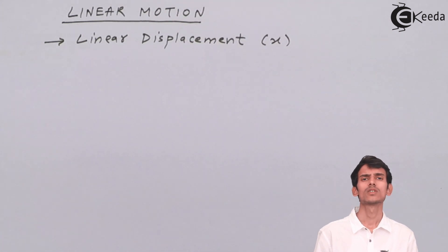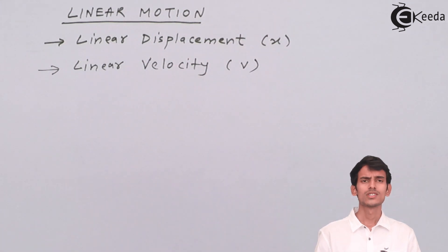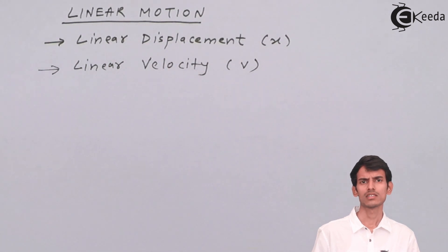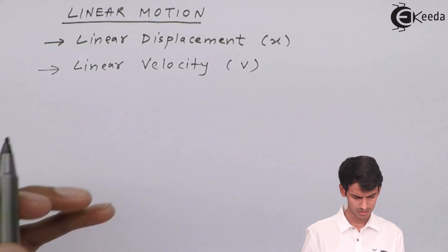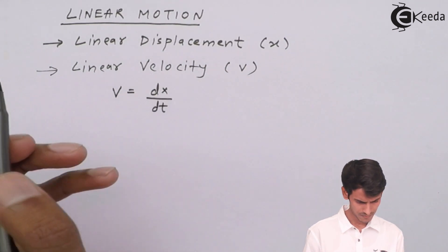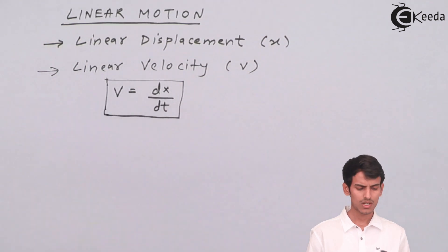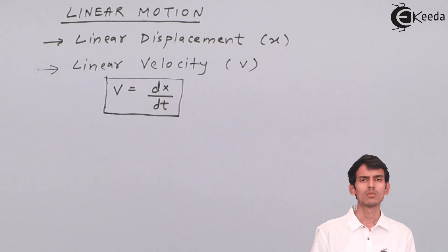The next term involved is linear velocity. Velocity is nothing but the rate of change of displacement. Displacement is denoted by x, and velocity is denoted by small v. There is also a mathematical formula relating velocity and displacement. Velocity is the change of displacement per unit change in time — that is linear velocity.